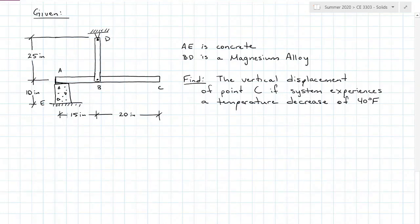In this example we have member ABC supported by a link BD and a concrete stump AE. Link BD is made of a magnesium alloy. We want to find the vertical displacement of point C if the system experiences a temperature decrease of 40 degrees Fahrenheit. If the temperature is decreasing, all our members are going to shrink. I do care about BD and AE.